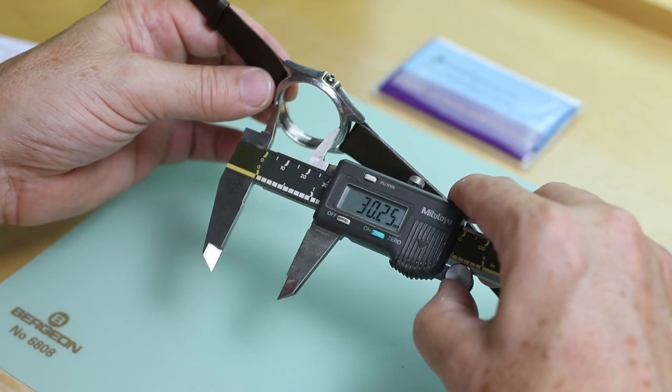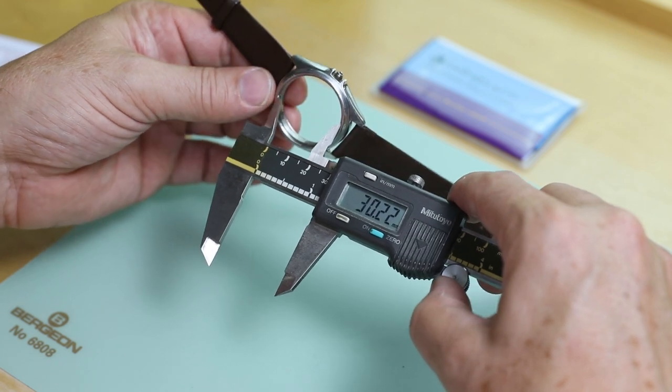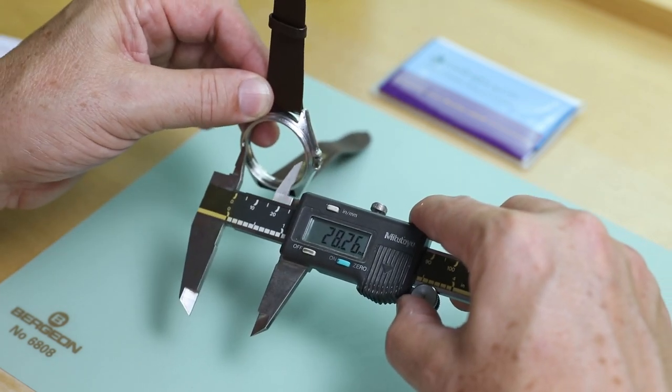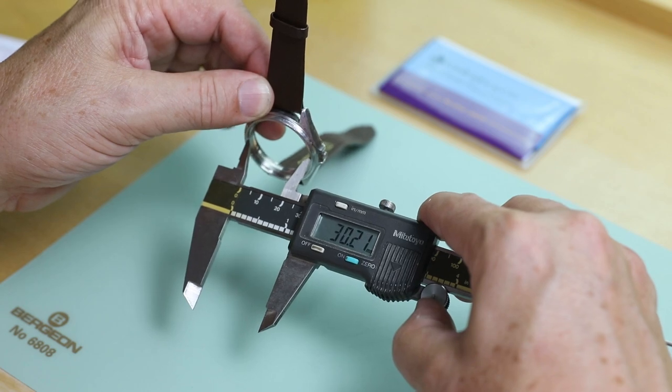If the crystal is broken or missing, you can measure the inside of the bezel. You will need a caliper with an inside measuring jaw to do this.